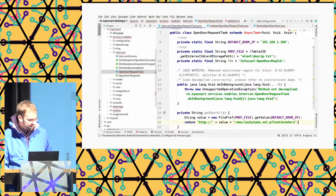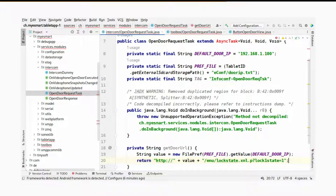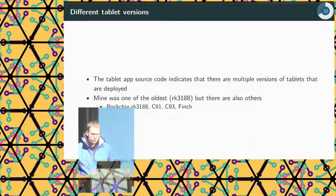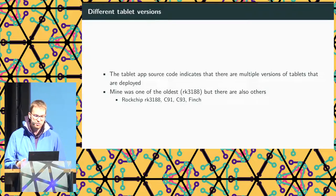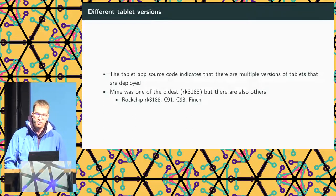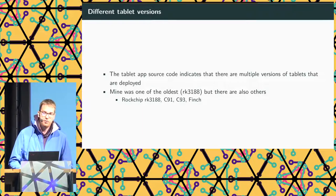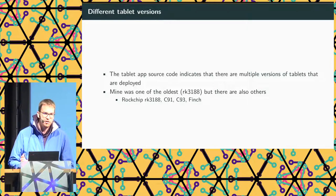Here we have a screenshot of code from the tablet app — specifically the part used to unlock the door when someone rings the main building entrance. In the code, we also see four different versions of tablet hardware: the RK3188 (which I had), C91, C93, and Finch. Some versions appear to run different software or have a different UI.